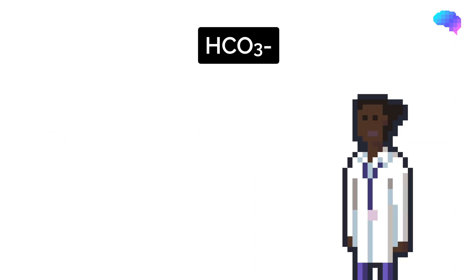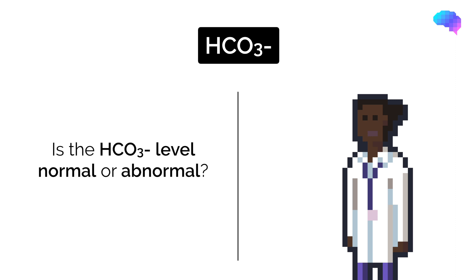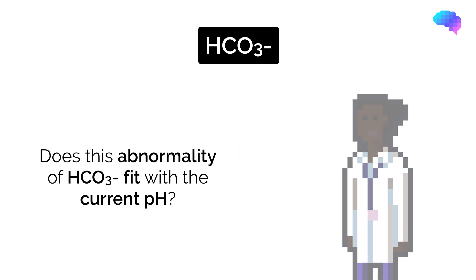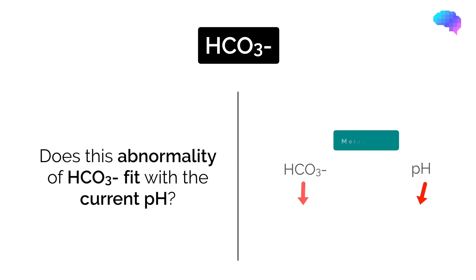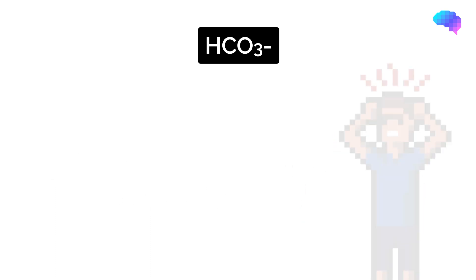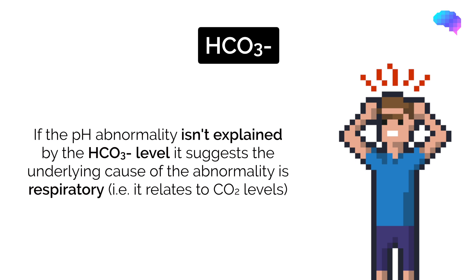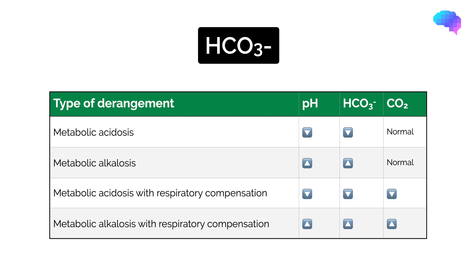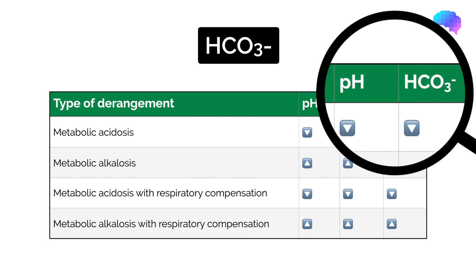So we need to ask ourselves: is the HCO3 normal or abnormal? If it's abnormal, does this abnormality fit with the current pH? For example, a low HCO3 and acidosis? If the abnormality doesn't make sense as the cause for the deranged pH, it suggests the cause is more likely respiratory, which you should have already known from your assessment of CO2. You may note that in these tables, HCO3 and CO2 are both included, as it is important to look at each in the context of the other.